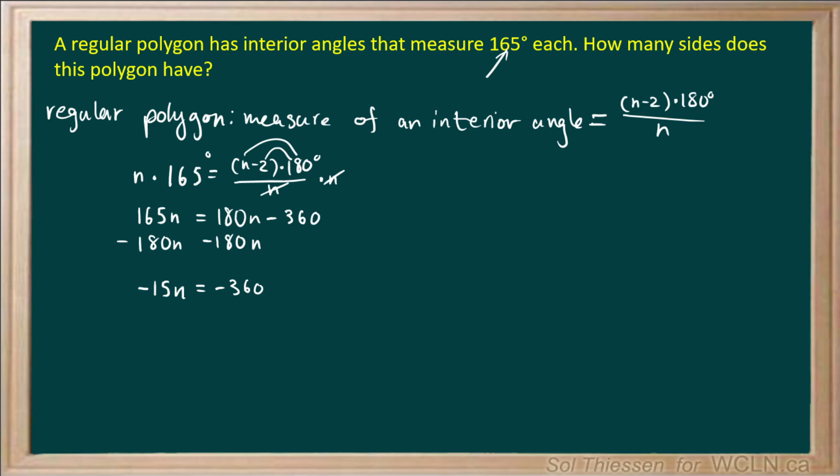Now we can divide both sides by negative 15 to leave us with N equals negative 360 divided by negative 15, since these negative 15s cancel on the left.